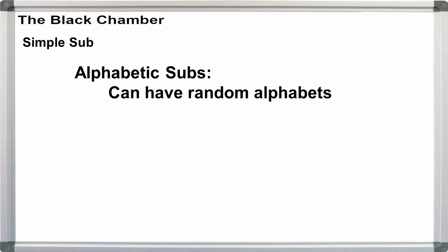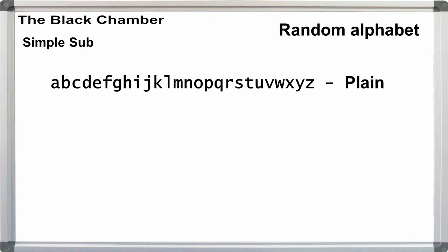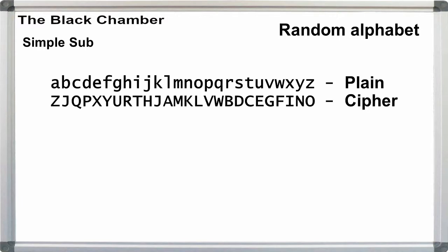Alphabetic subs, though, can be random or keyed. Random alphabets are created as the name applies. We start out by writing out the plain text alphabet in ascending order. By convention, the plain text alphabet is lowercase. Then we randomly assign the cipher alphabet letters to the plain text alphabet, using uppercase by convention.